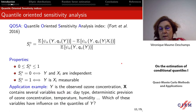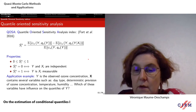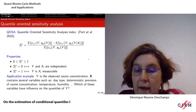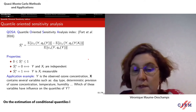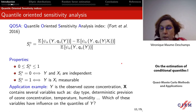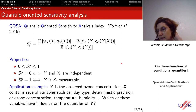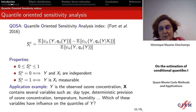An example we will treat at the end of the presentation is where y is the observed ozone concentration and x includes several variables: the type of day, temperature, humidity, and wind. We would try to figure out which of these variables have some influence on the quantile of y. That will be the last example at the end of the presentation tomorrow.